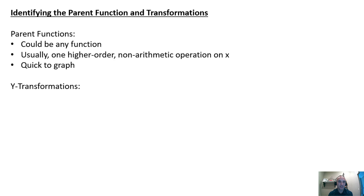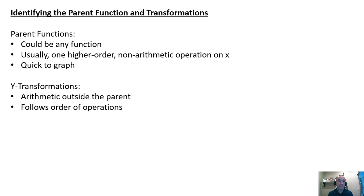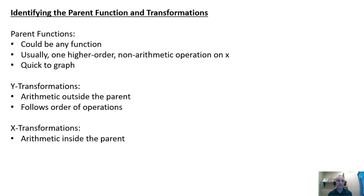Y-transformations are identified by looking at the arithmetic outside of the parent — it's the arithmetic that happens to the parent operation. It follows the order of operations, so Y-transformations are fairly simple because they follow the order of operations.